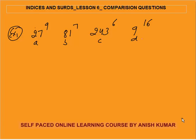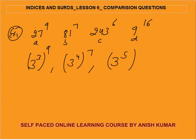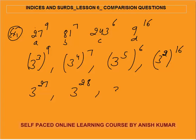From the first look you can see that these are all 3 raised to some power. Let's express them: 27 is 3^3, so 27^9 = (3^3)^9 = 3^27. 81^7 = (3^4)^7 = 3^28. 243^6 = (3^5)^6 = 3^30. And 9^16 = (3^2)^16 = 3^32.